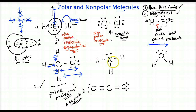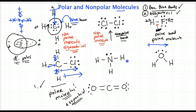Getting quicker now — we have three polar bonds. This is not the same all the way around. Requirement one is satisfied: it has polar bonds. And it's not the same all the way around, which means it is asymmetrical. This is a polar molecule.